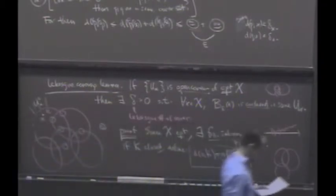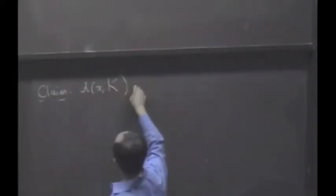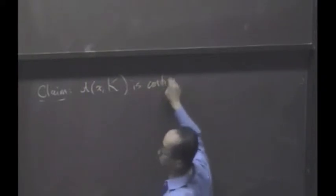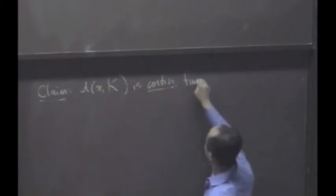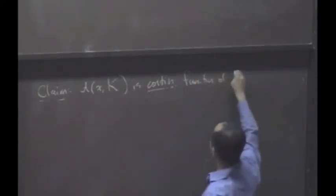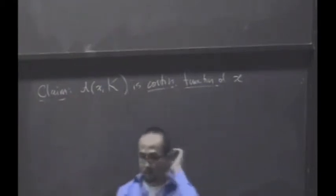What can I say about this distance notion? Well, I claim this is where I'm going to let you do this part. The distance between x and k is a continuous function. This is using some of Laura's idea. Fix k, move x around. I claim this distance is going to be continuous.